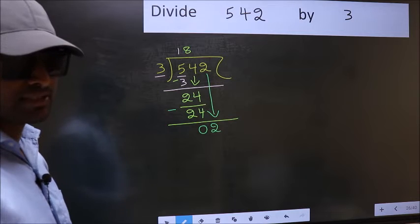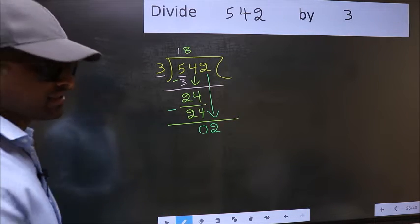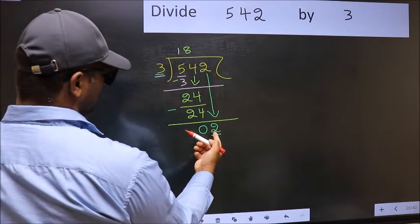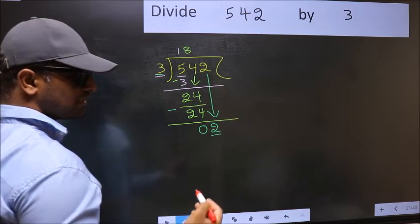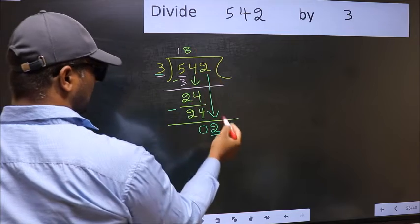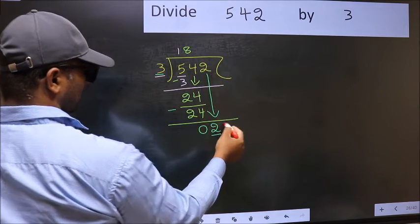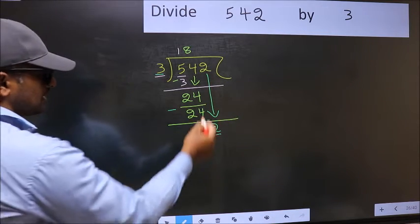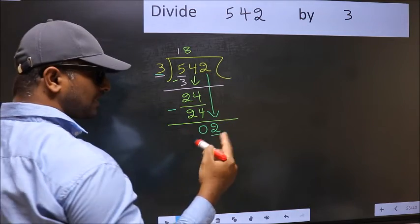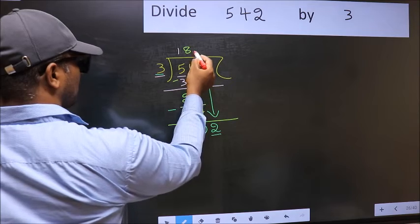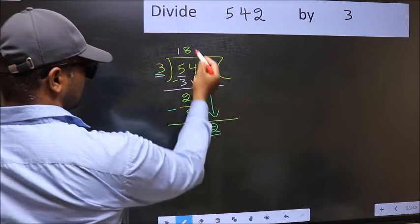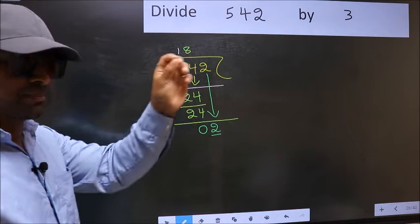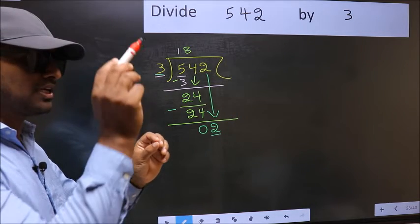After this step, the mistake happens. And the mistake is this: here we have 2 and here 3. 2 is smaller than 3, so what many do is they directly put a dot and take 0 here, which is wrong. Why is it wrong? Because just now you brought this number down, and in the same step you want to put a dot and take 0 here, which is wrong.